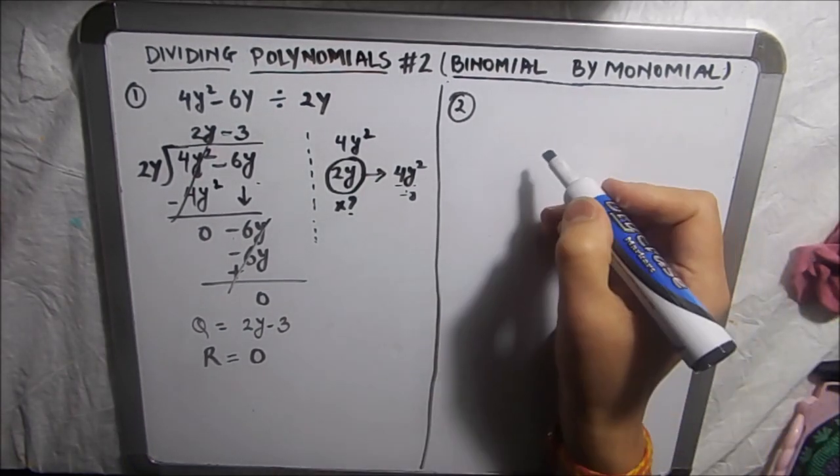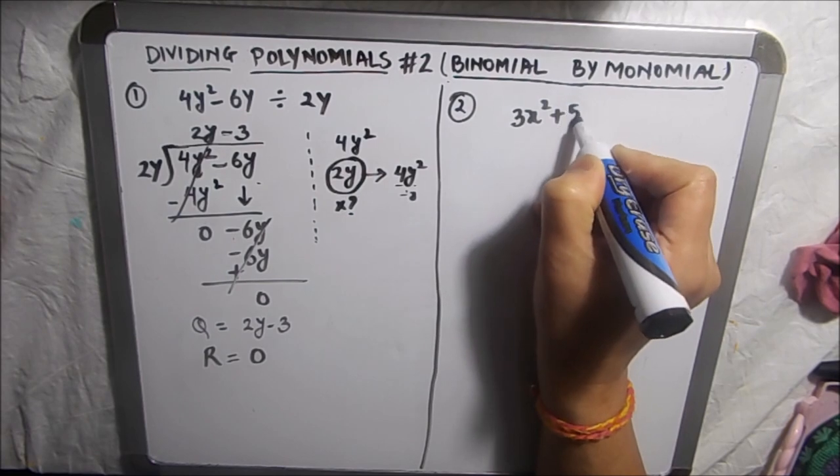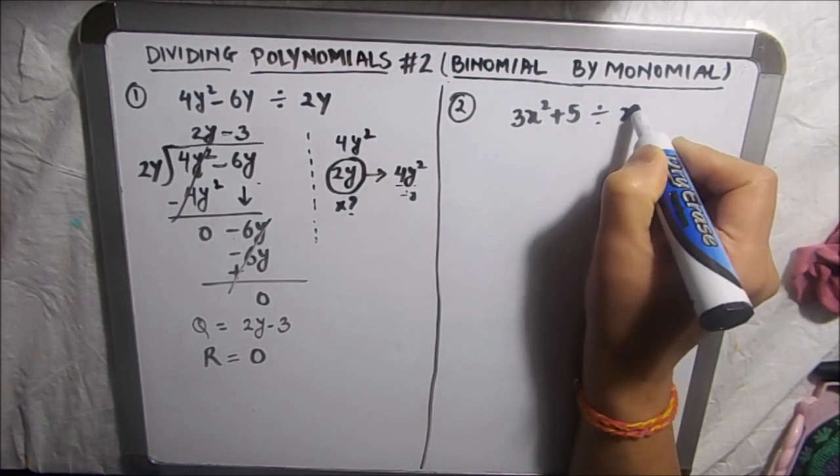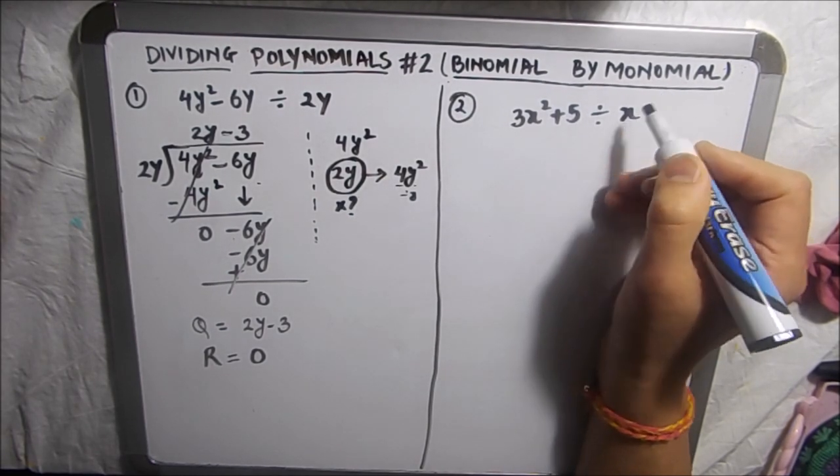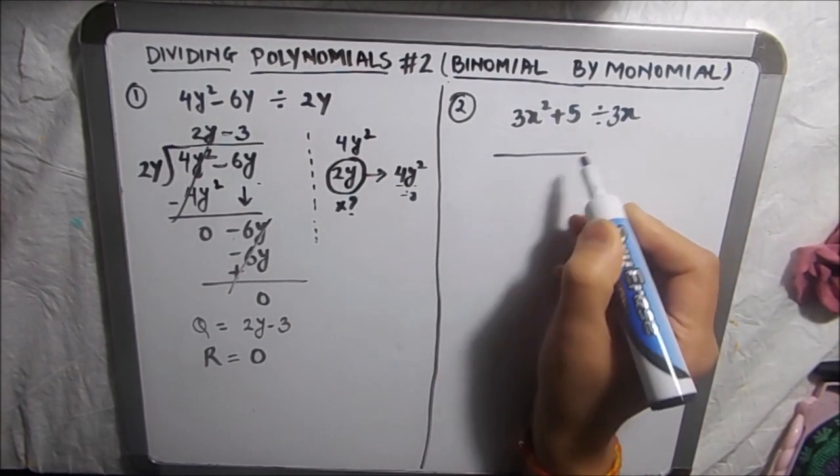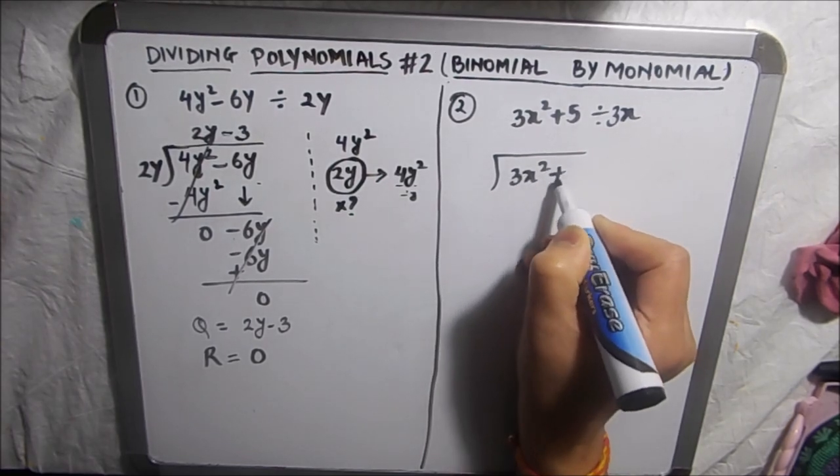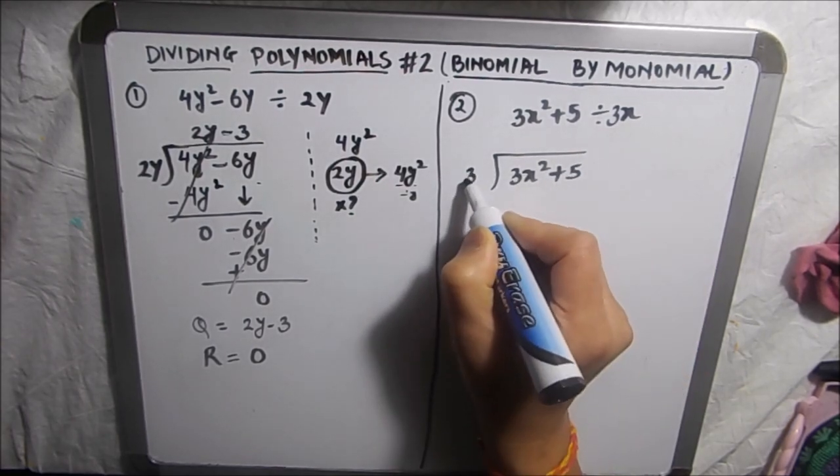Now let's move on to the next example which is 3x² plus 5 divided by 3x. Now here we will write our dividend here, 3x² plus 5, and divisor on this side here.